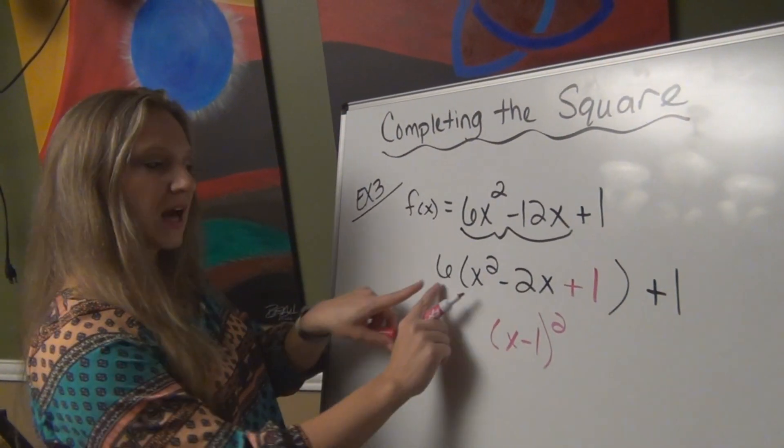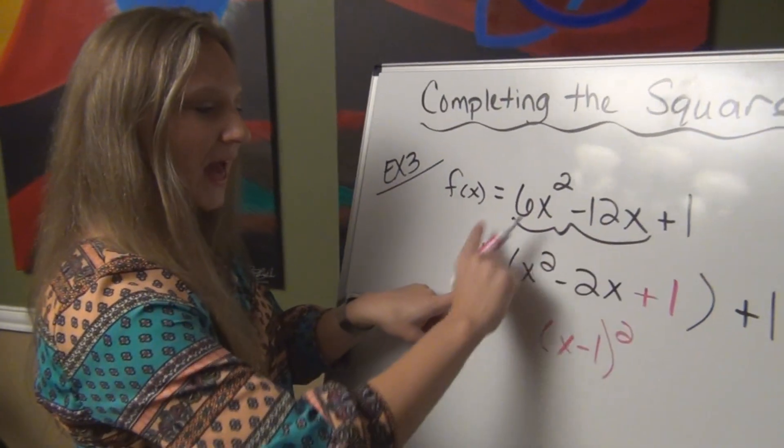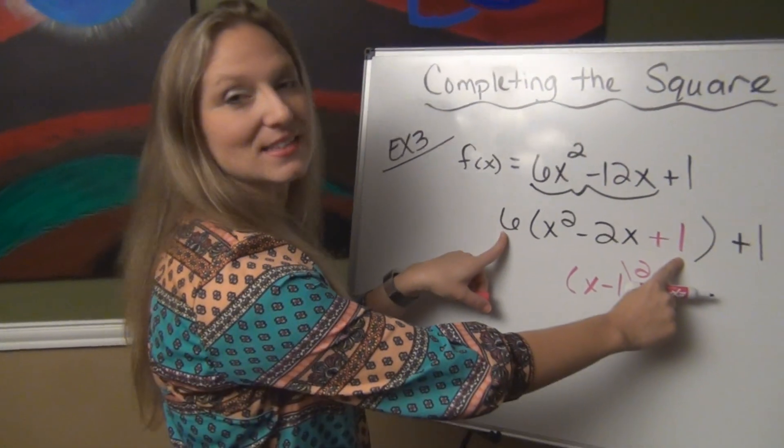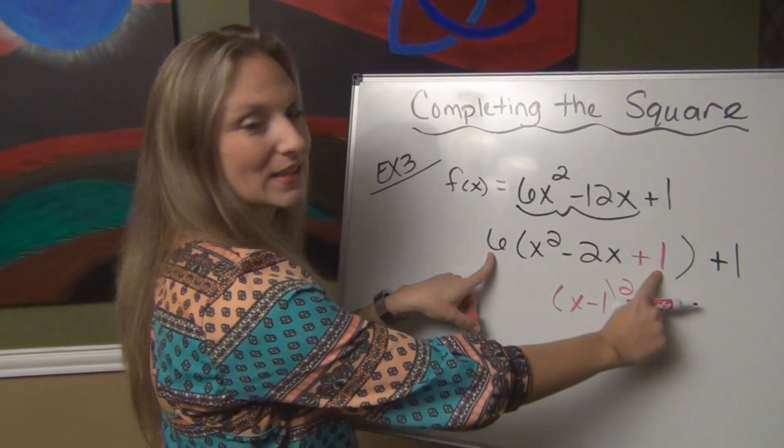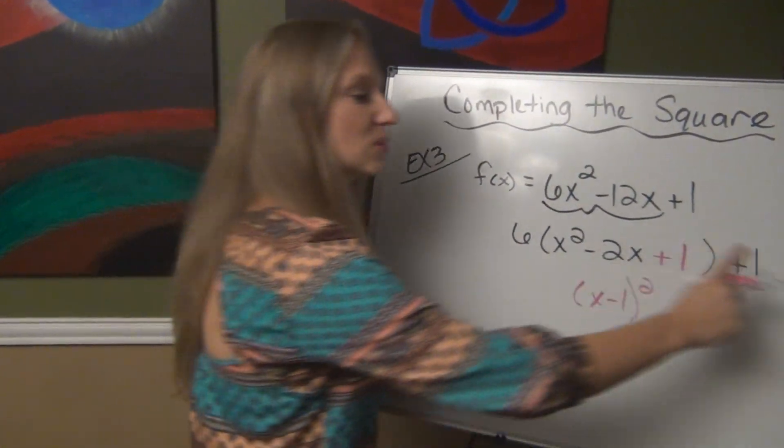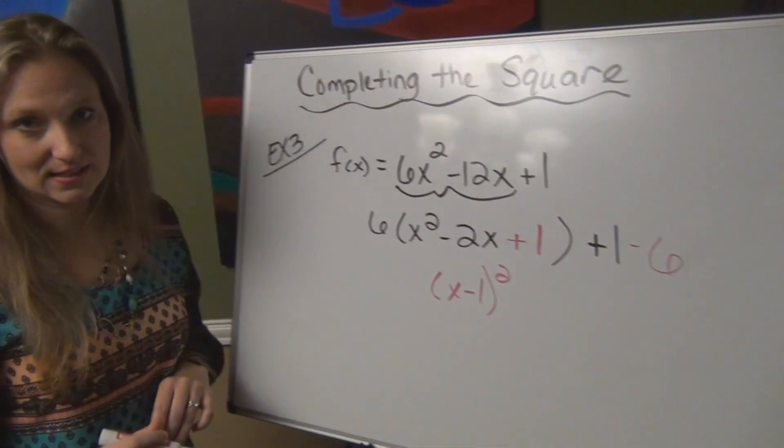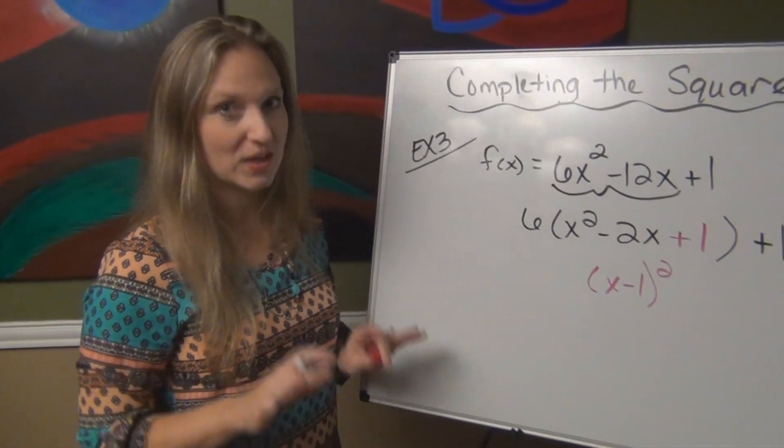However, because of this 6 out front here, I'm really adding 6. If I was going to distribute this back out, I really added 6 to the problem because 6 times 1 is 6. So instead of subtracting 1, I really need to subtract 6 this time to keep my equation balanced.